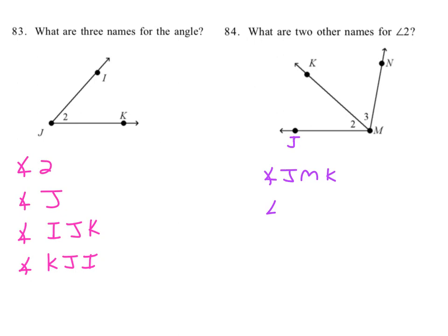Or we could also call it angle—we could come from the other end. Instead of JMK, we could start at K, go through M, and get out to J, so KMJ. Yeah, that's how you do it.